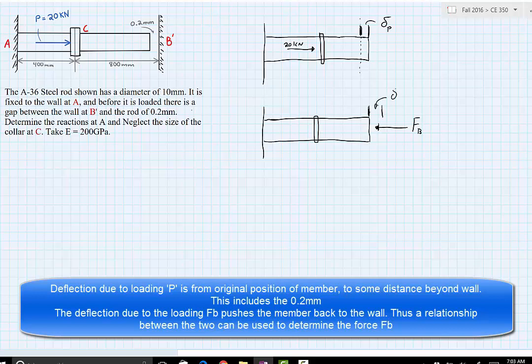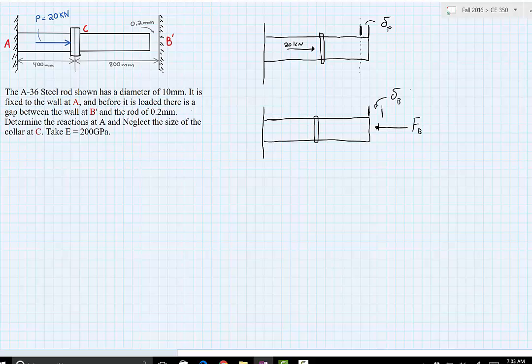So now we'll have a deflection here of delta B. We know that there's a gap here. The original problem shows a gap of 0.2 millimeters. And so we can use these two deflections and our known information: 0.2 millimeters equals the difference between these two deflections. So we'll say delta P minus delta B.